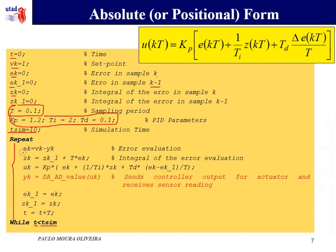The first thing is to evaluate the error, then update the integral of the error. UK from the previous value plus this approximation. Then the equation of the UK, this is the absolute form. Pass this value for the actuator and collect the value from the sensor. This is a DA-AD process. Update or store the value of EK and ZK, update the time and that's it.